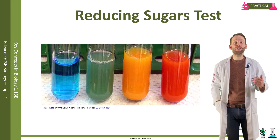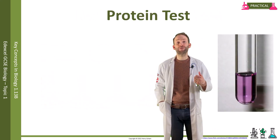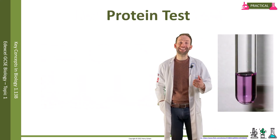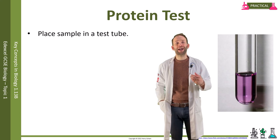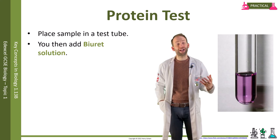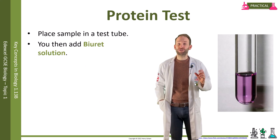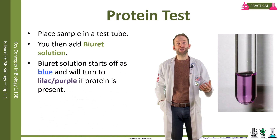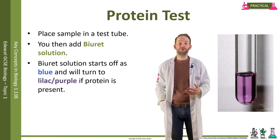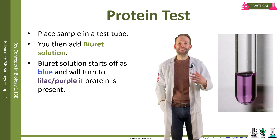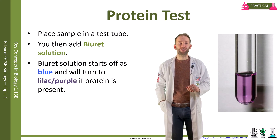To test for protein, you take the sample to be tested and place it in a test tube. You then add Biuret solution, which starts off blue. If there is protein present, it will turn lilac or purple. There is no need to heat this test — it is done just at room temperature.